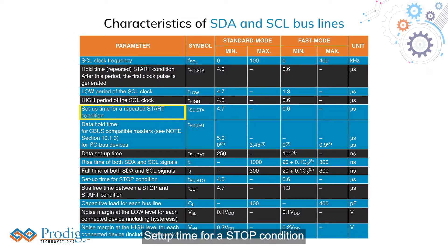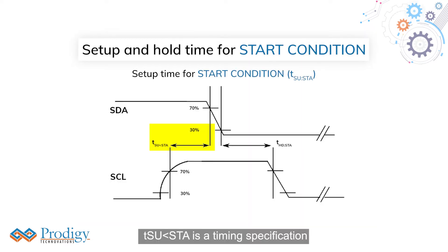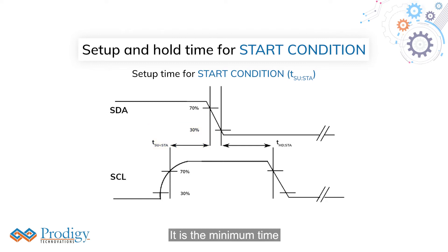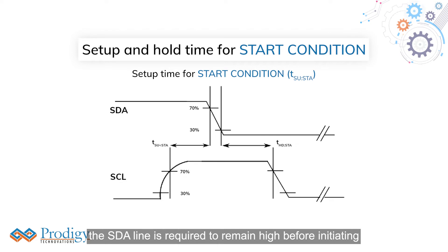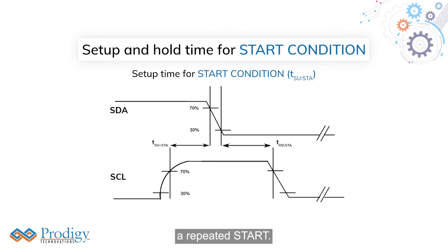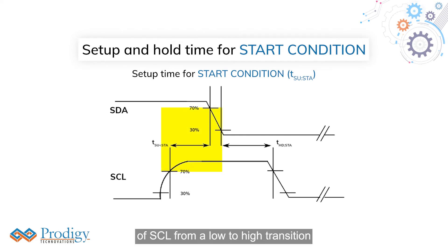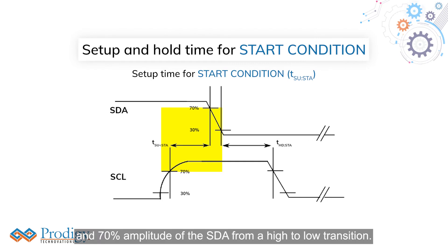Setup Time for a Start Condition, TSU STA, is a timing specification that is only taken into account during a repeated start condition. It is the minimum time the SDA line is required to remain high before initiating a repeated start. This is measured as the time interval between 70% amplitude of SCL during a low-to-high transition, and 70% amplitude of SDA during a high-to-low transition.